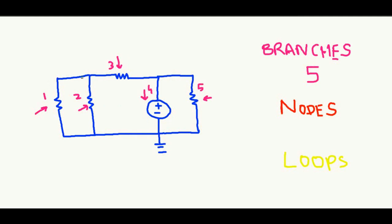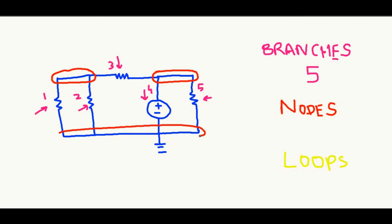Now let's look at the connecting points of these branches for the nodes. The first and second branch are connected here, and branch three is also connected to this point. Branch three is also connected on another point where branches four and five are connected. Lastly, four branches are connected at the bottom as well. So altogether, naming them A, B, and C, we have three nodes.